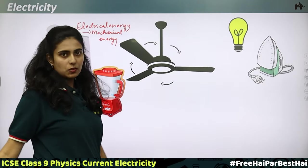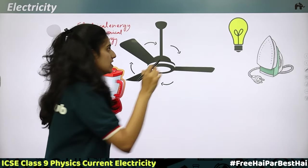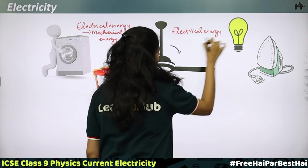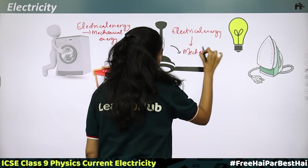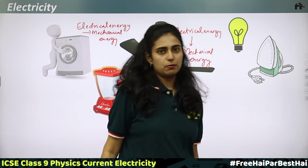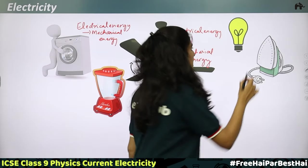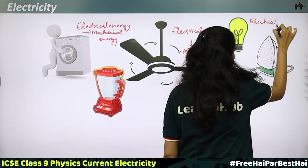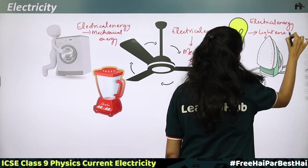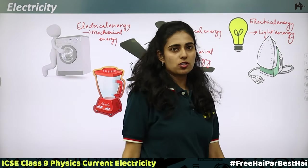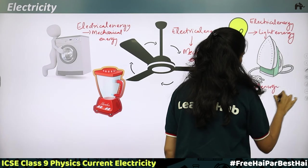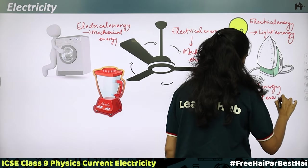In the case of a fan, when you switch it on, the electrical energy is getting converted into mechanical energy — the blades rotate. In the case of a bulb, it is not mechanical energy; the electrical energy gets converted into light energy. In an iron box, electrical energy is getting converted into heat energy.